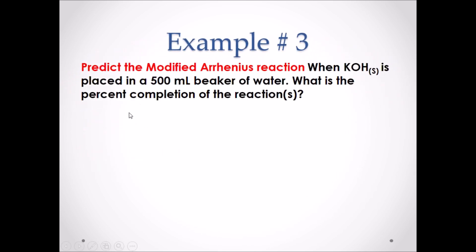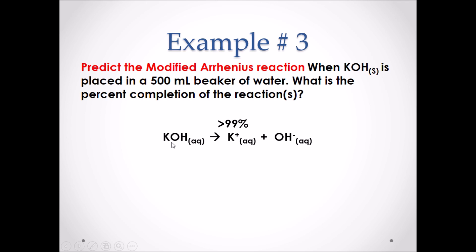Example number three: predict the modified Arrhenius reaction when KOH is placed in a 500 mL beaker of water. What is the percent completion of the reactions? KOH is a strong base — it is an ionic compound with OH already in the chemical formula. Strong bases do not react with water; they just dissociate into their ions K⁺ and OH⁻. This reaction proceeds to completion, so the products are greater than 99%.